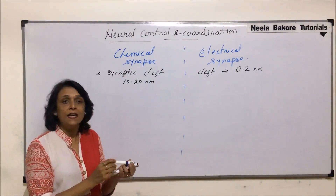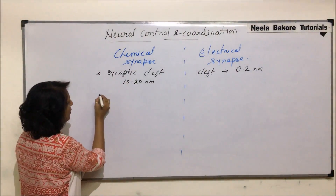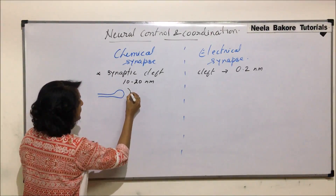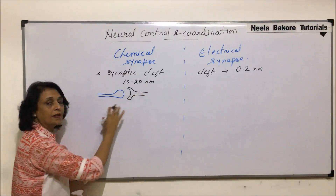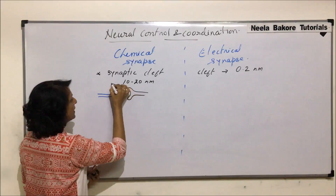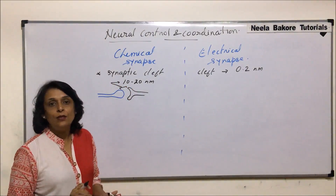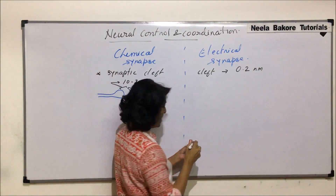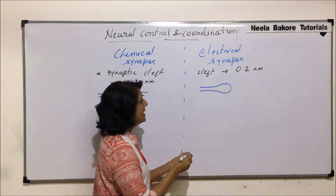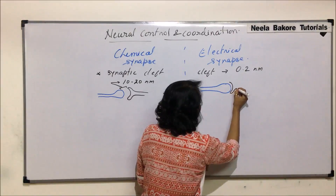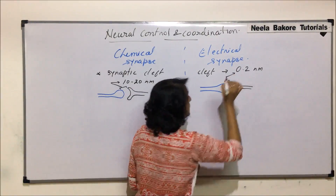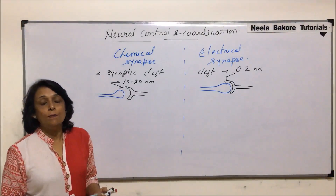To understand this, we'll draw a small diagram — drawn slightly differently from before. Suppose this is the axon end bulb of one neuron and here is the dendrite of the other neuron. This is the synapse. The gap we are talking about — the synaptic cleft — is 10 to 20 nanometers wide in the case of chemical synapse. In electrical synapse, there is again a close proximity between the axon end bulb and the dendrite, but the gap between them is very, very short.